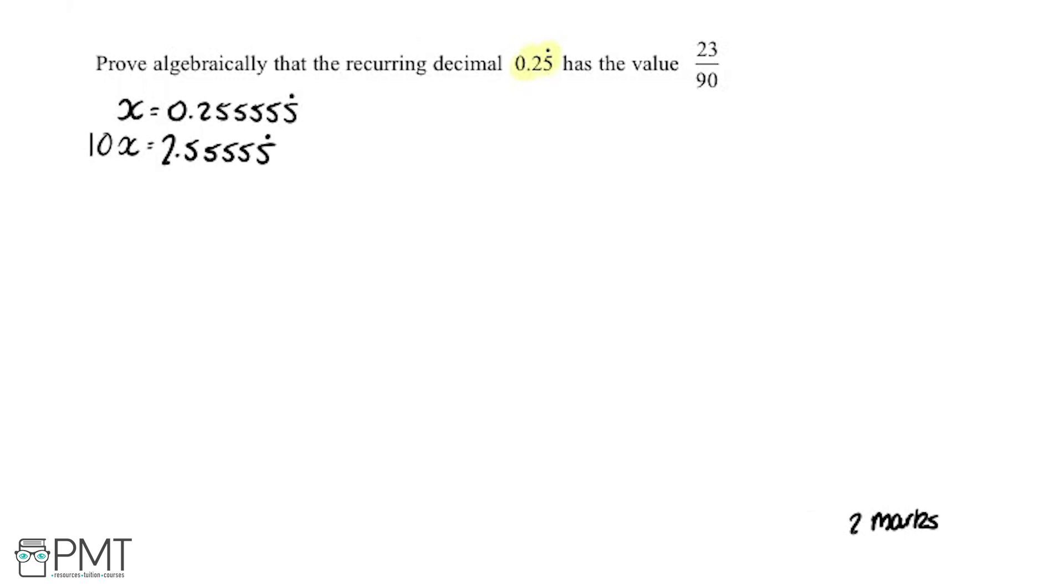Essentially whenever you get a question like this, your goal is to isolate the recurring part to the right of the decimal point. In this case we times by 10, which meant on the right hand side of the decimal point is just the recurring part. We'll see why we do that in a second.